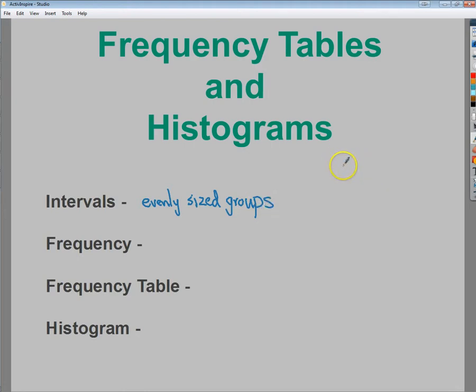If I were to do say 1 through 12 or something, I may say how many numbers in that group fall between 1 and 3, and then 4 and 6, and then 7 and 9, and then maybe 10 and 12. So those would be my intervals. I'm breaking it into groups of equal size. In most cases they're even. Occasionally they're not, but that's how it works.